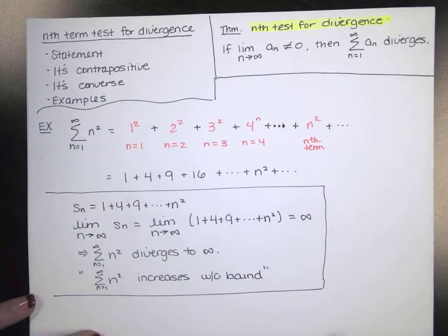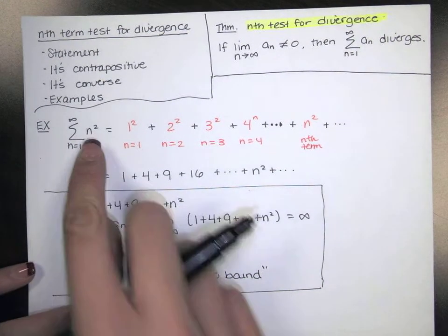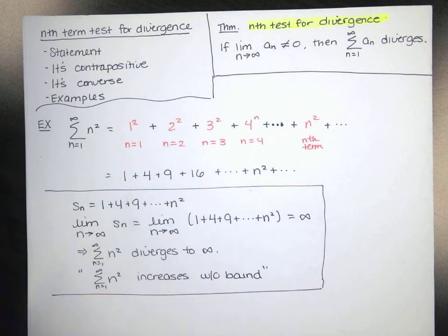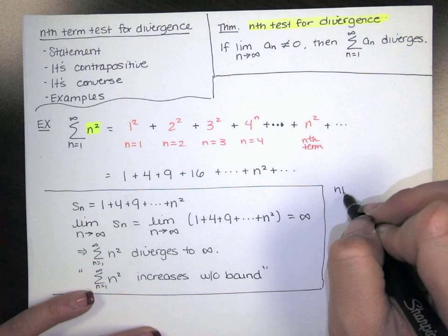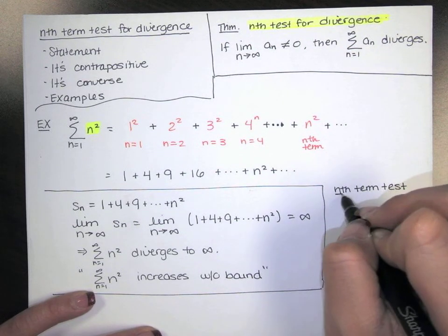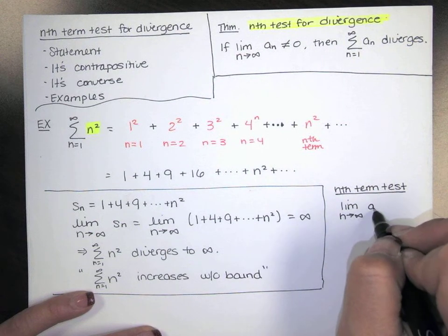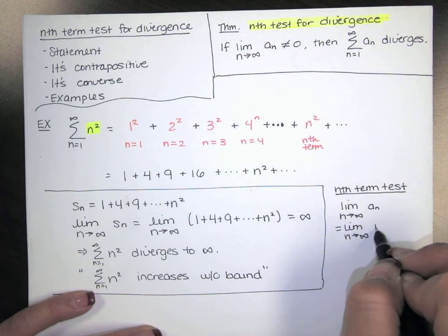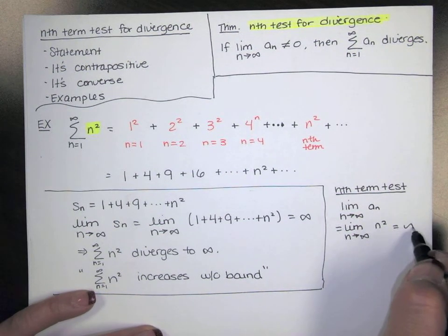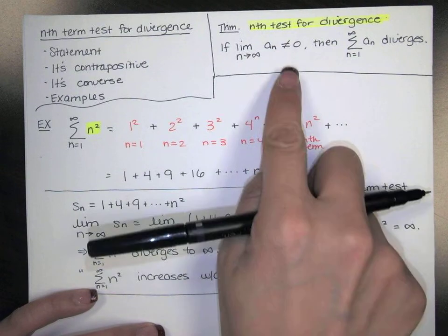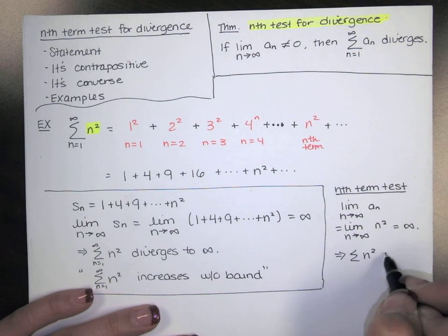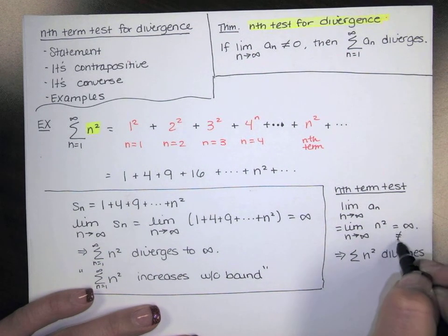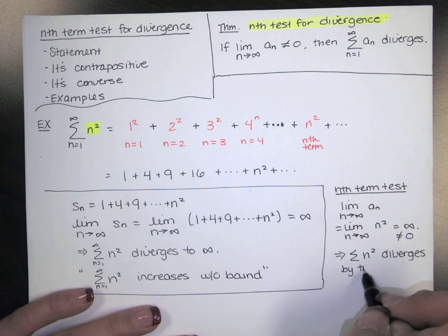I could also use the nth term test for divergence. The nth term test just says take a look at your a sub n, which is n squared. It's not the nth partial sum, but it's the nth term on your list. Take its limit. The limit as n goes to infinity of a sub n is the limit as n goes to infinity of n squared. If n is a large number, n squared is a large number, so we get infinity. Since that limit is not zero, by the nth term test for divergence, we're guaranteed that our series diverges.